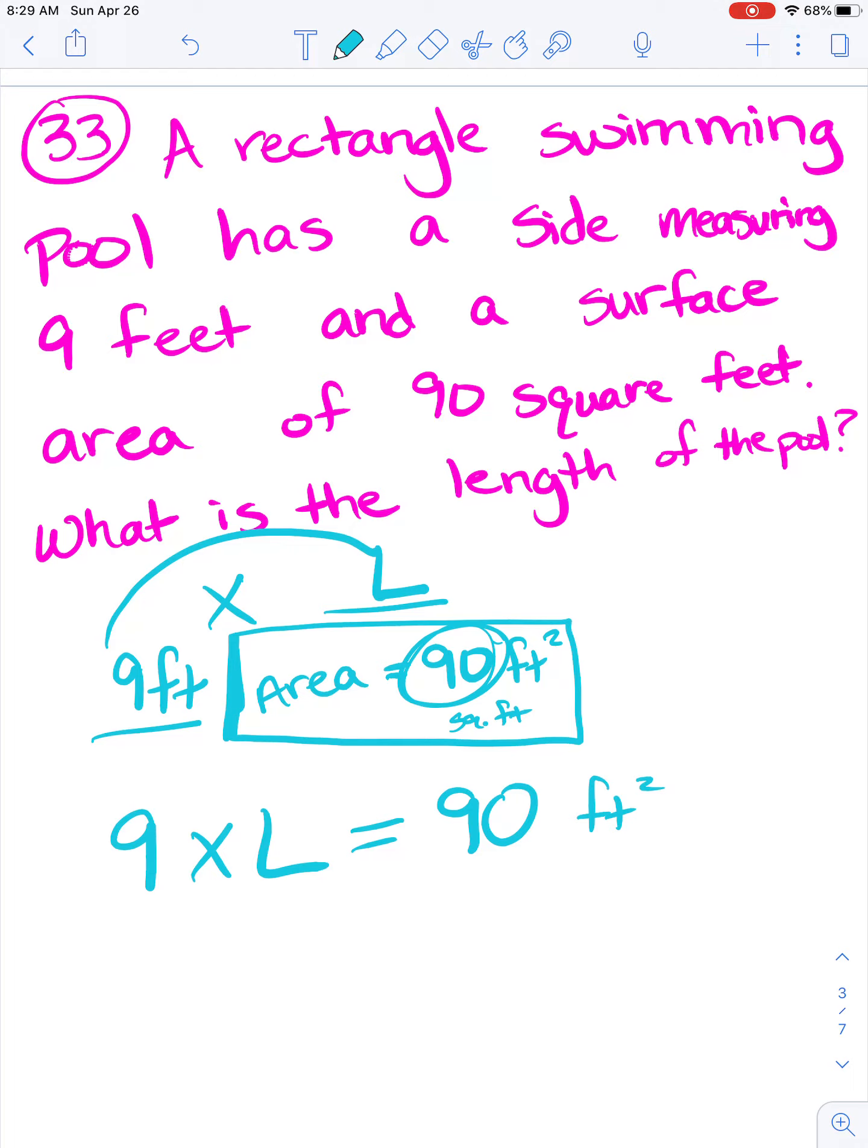I want you to think like a fact family. How can I figure this out? If I take 9 times L that doesn't work. L times 9 that doesn't work. Well what's my inverse operation of multiplication? Inverse means opposite. What's my inverse or opposite of multiplication? It's division. When we do division we always do the biggest number first. So we'll take 90 divided by 9.